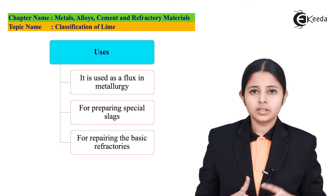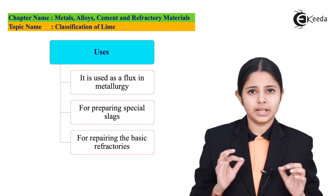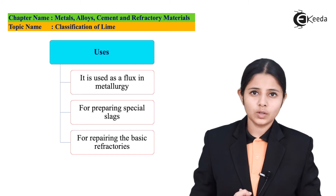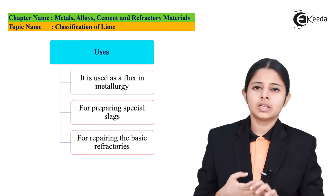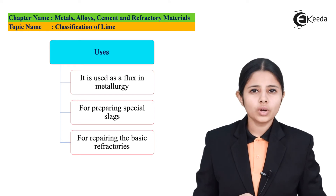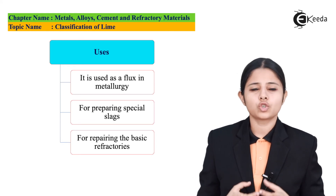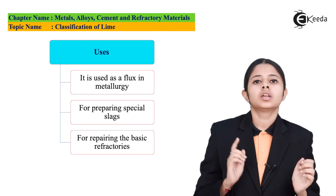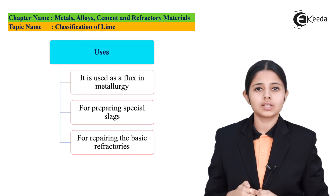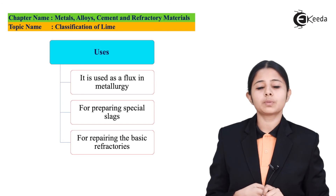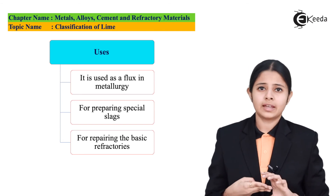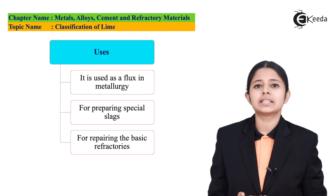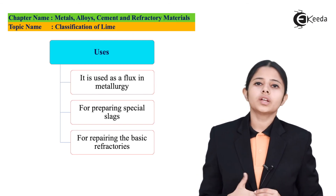The properties of dolomitic lime are: it is extremely expensive and one of the most expensive limes; it is plastic; it gives good strength; it produces a very strong mortar; and it has low sand carrying capacity. Its uses are: it is used as a flux in metallurgy, it is used for preparing special slags, and it is used for refining and repairing basic refractories.